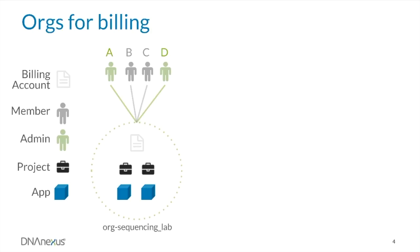Additionally, by billing a project to an org, the user assigns ownership of the project to the org. The org admin, as the administrative user in the org, has the ability to discover and oversee all org projects, as well as revoke permissions to any project billed to an org. If a user leaves the lab, the org admin can quickly gain control of all org projects the user had access to and revoke that user's access as well.